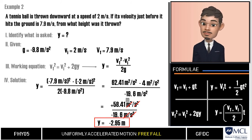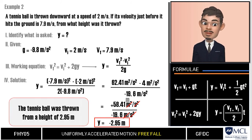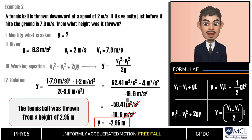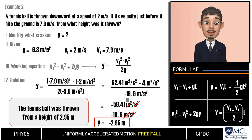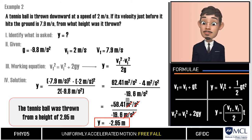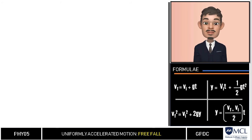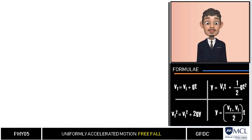We conclude that the tennis ball was thrown from a height of approximately 2.95 meters. The negative sign only indicates the downward direction of the motion of the ball. If everything is clear so far, let us now proceed to our last problem for this video.